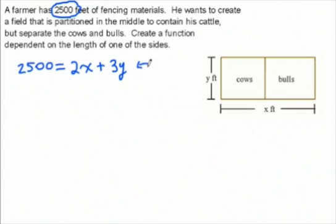This is called a constraint. We don't have any more fencing than 2,500 feet, so whatever I choose for x and y, this side of the equation has to add up to 2,500.